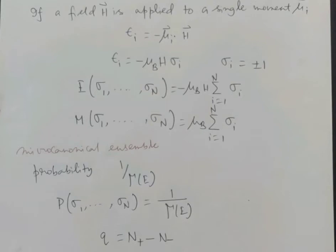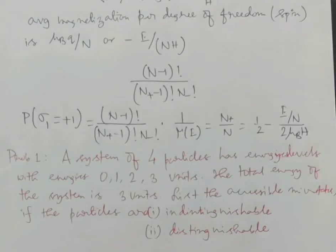We can immediately write down the number of states with given N+ and N-, since this is simply the number of ways of dividing N objects into two groups: N+ in one and N- in the other. That is, tau(E) equals N factorial divided by N+ factorial times N- factorial.